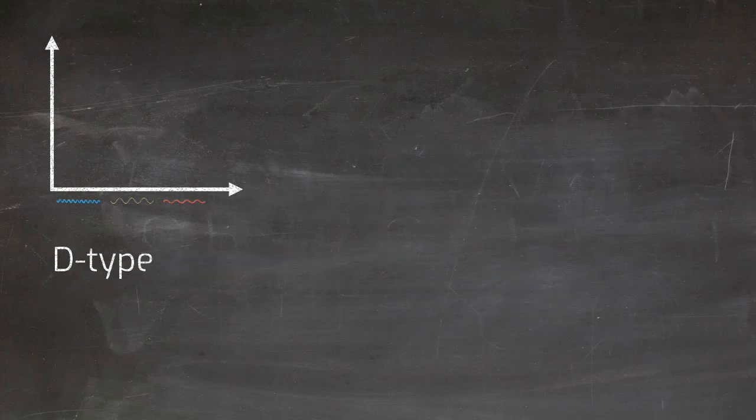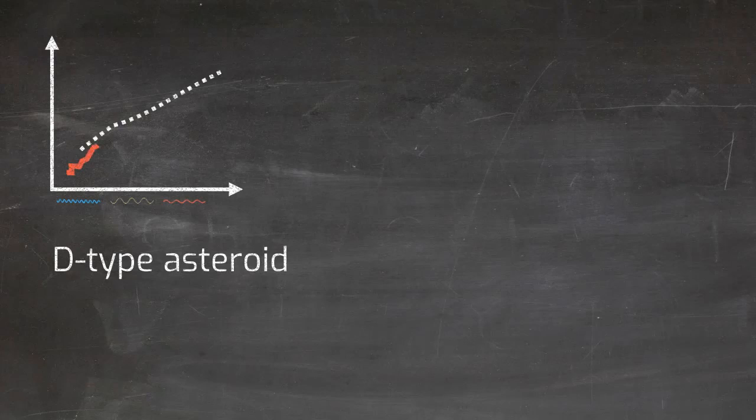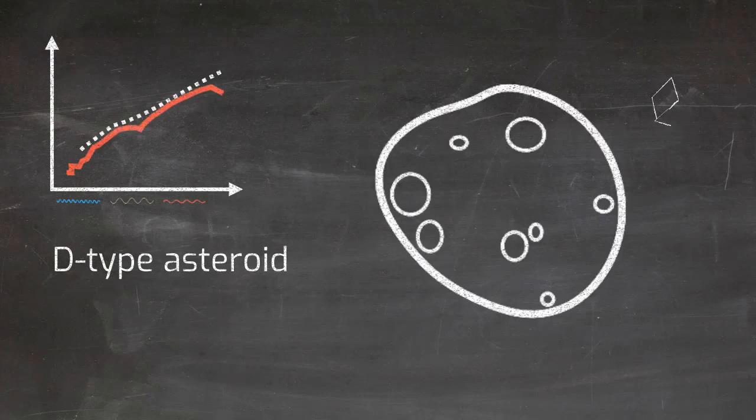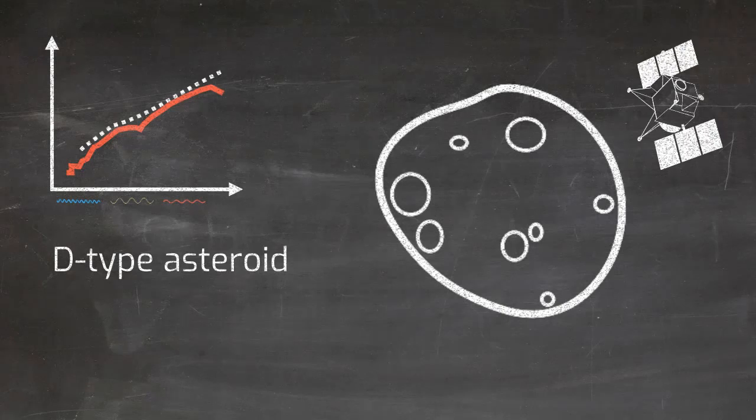D-type asteroids have very low albedos and redder spectrum than either S- or C-types. Light reflected from Phobos and Deimos resembles this class of asteroid, suggesting that they may be captured asteroids with a D-type composition.